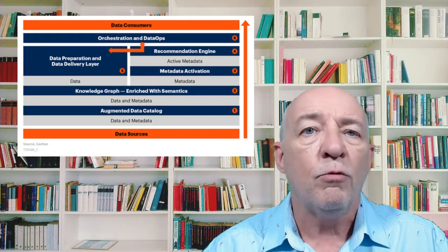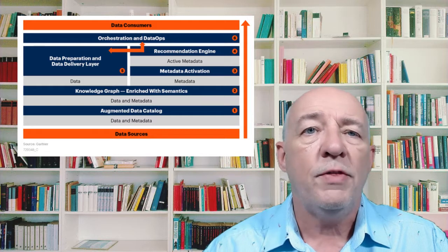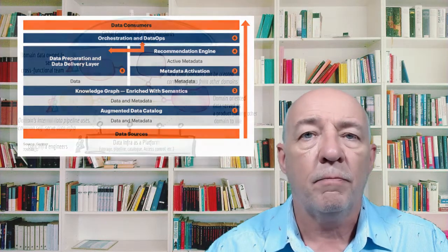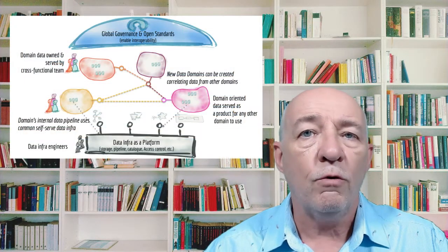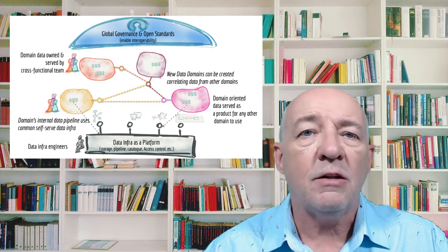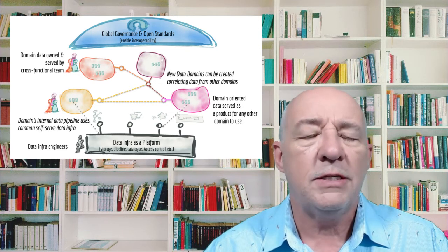Among these new concepts, Gartner's Data Fabric improves logical warehouses with active metadata and AI. ThoughtWorks Data Mesh tackles data warehouse bottlenecks with a data-as-a-product approach, while Data Lakehouse is promoted by Databricks as having the strengths of both lake and warehouse.